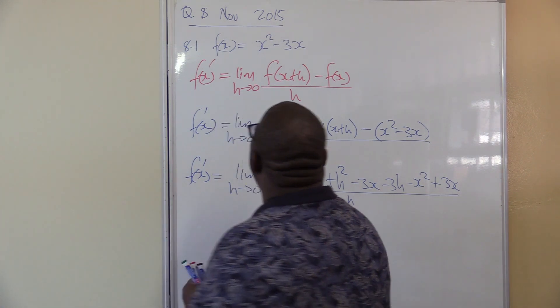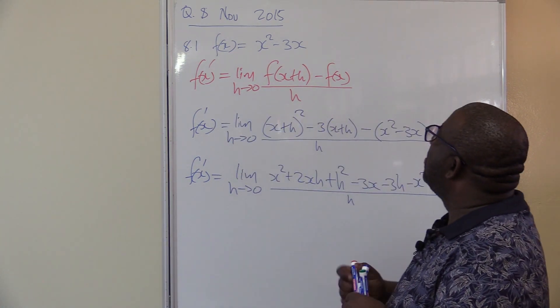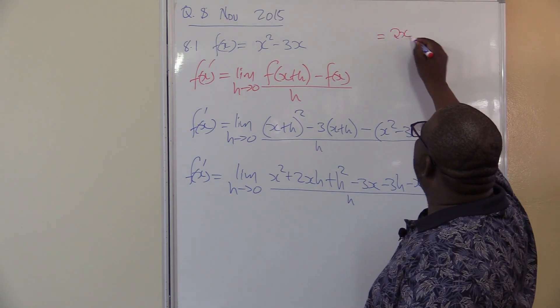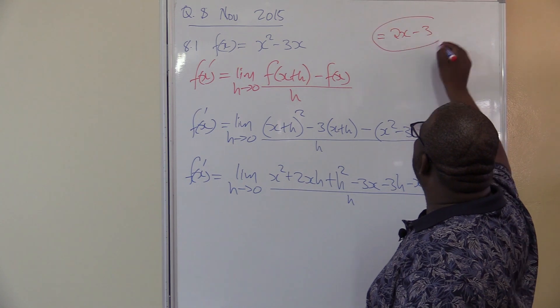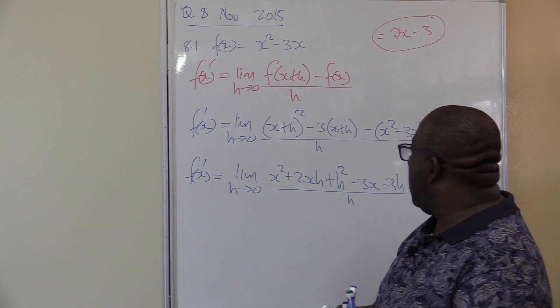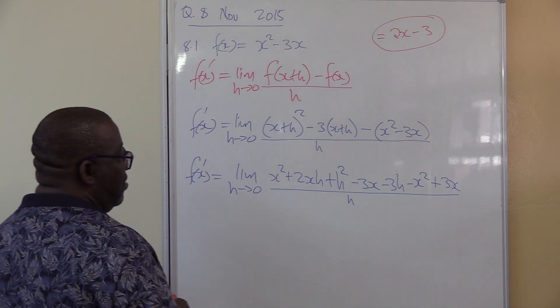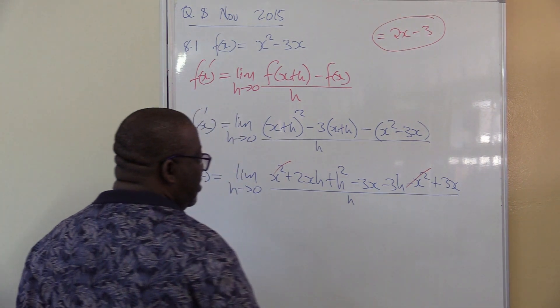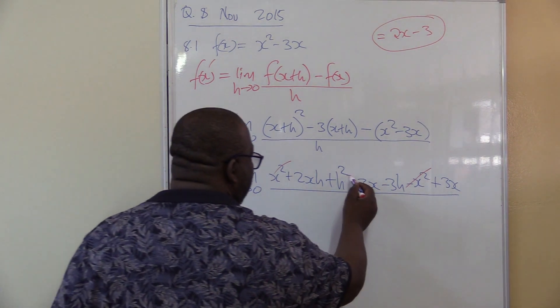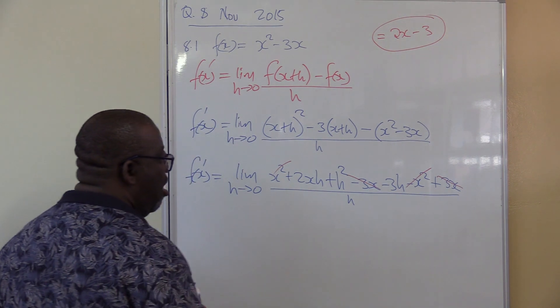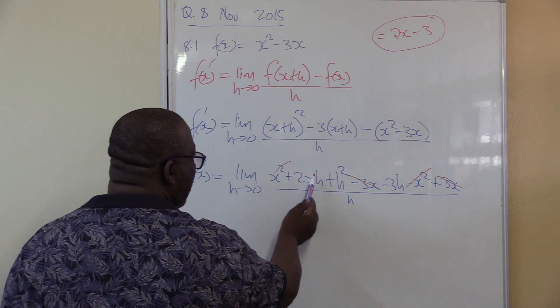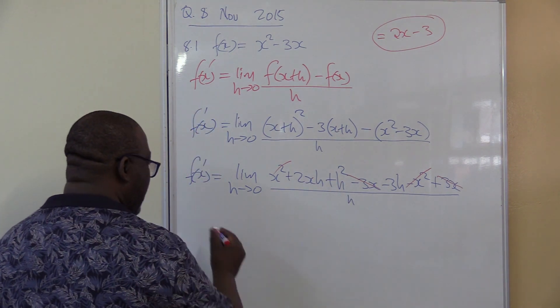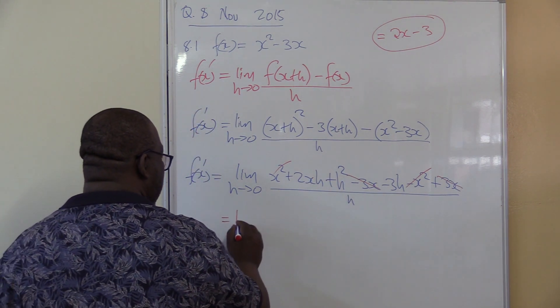Remember one thing? You can tell the answer before you even do the problem. The answer here should be 2x minus 3. This is the answer that you must get at the end here. Let's work it out. You can see that x squared minus x squared gives us zero. Minus 3 plus 3 gives us zero. How many terms left? 1, 2, 3. And all of them have got h, and I've got h here. Then I can take h as the common factor.